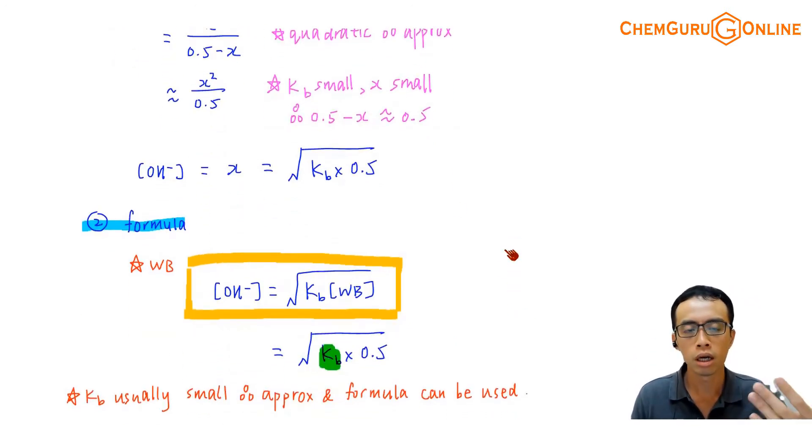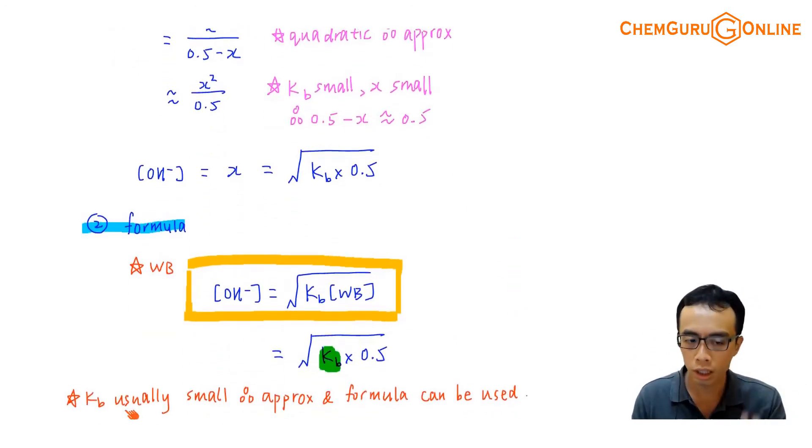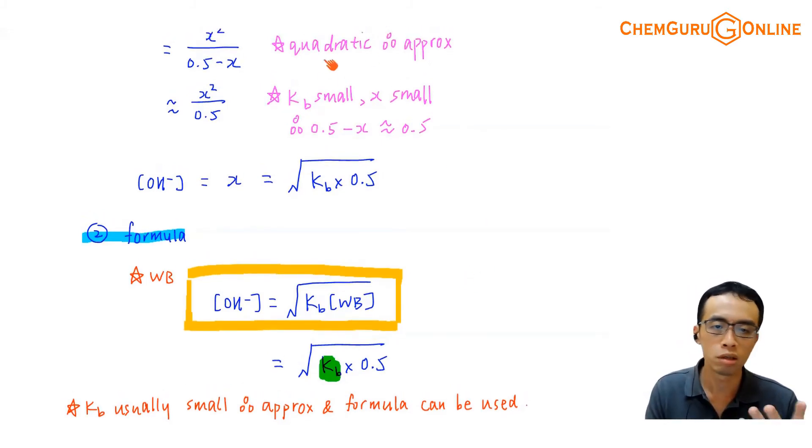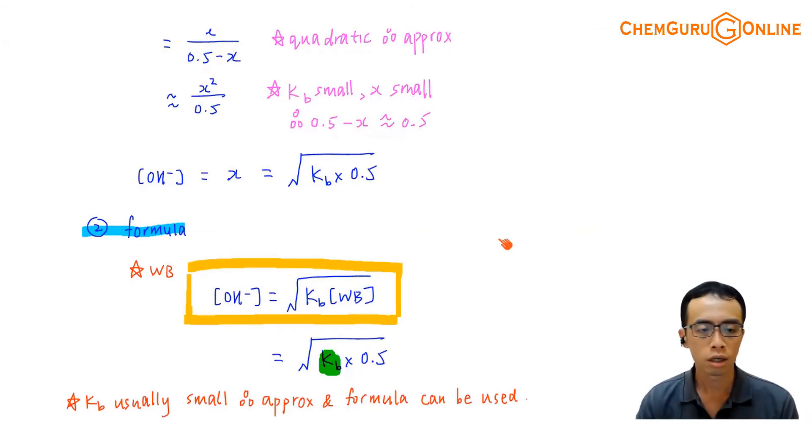Usually Kb will be sufficiently small, so we can use the approximation and formula safely. Even if you're given a big Kb, there's no other way - we still have to do this approximation and take the bigger error because otherwise we'll be dealing with a quadratic equation which I'm not required to solve. If it is quadratic, we always try to do approximation regardless of whether the error is big or small.